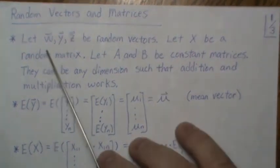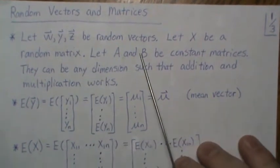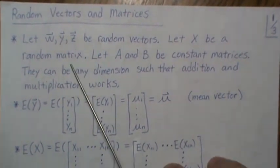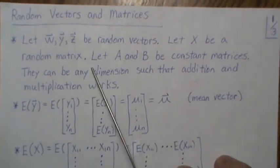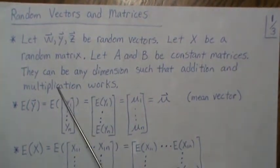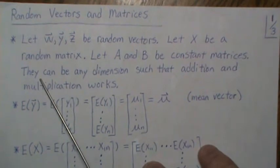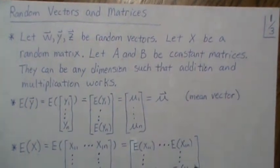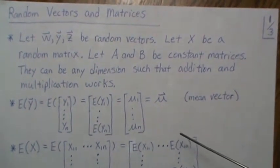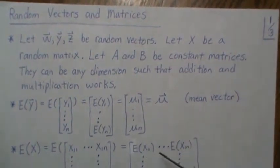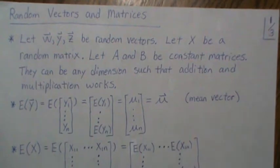Let w, y, and z be random vectors, let x be a random matrix, and let a and b be constant matrices. They can be any dimension such that addition and multiplication work, so I'm not going to explain what the dimensions are — we'll touch upon it in some of these derivations and properties.